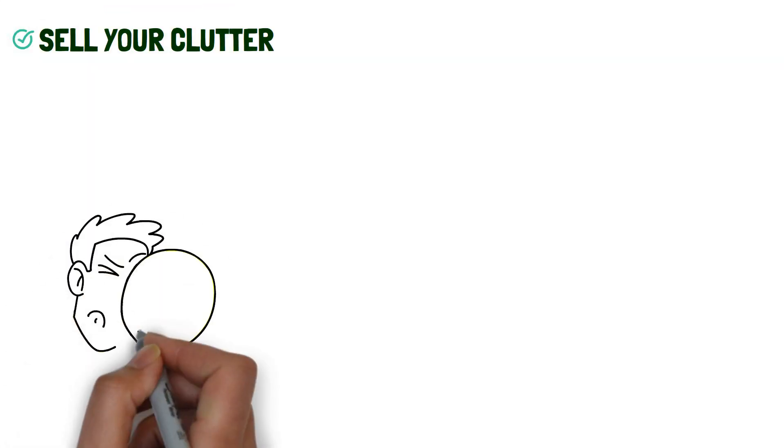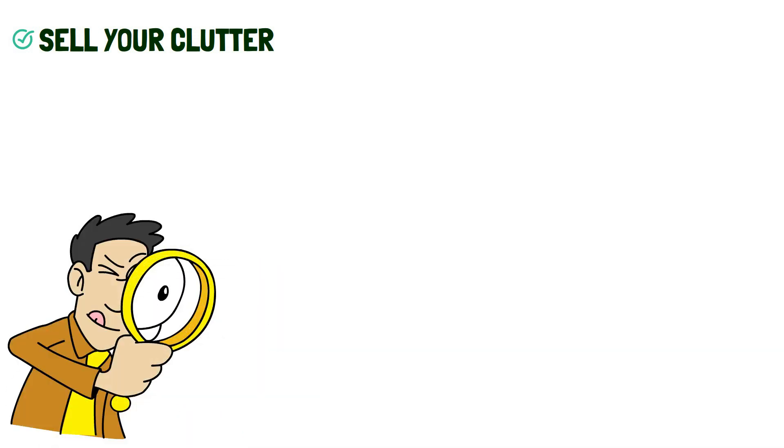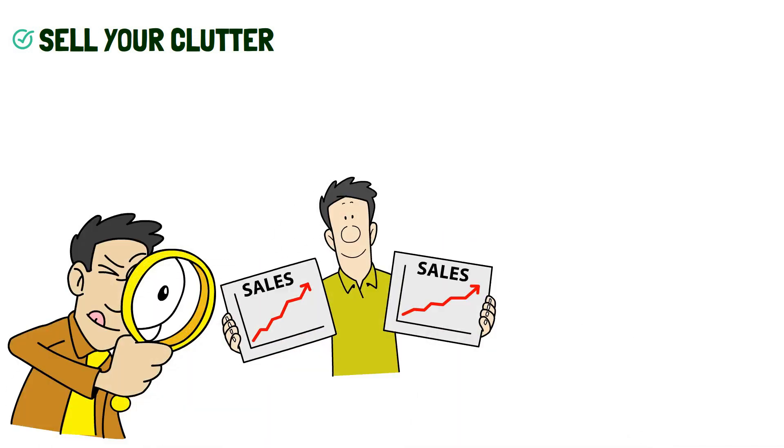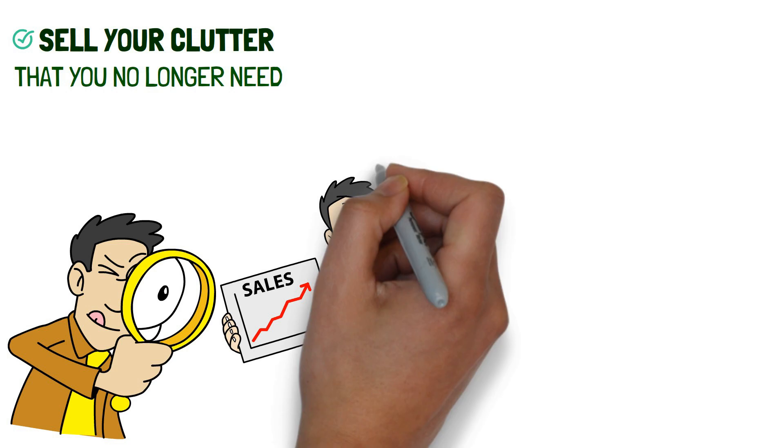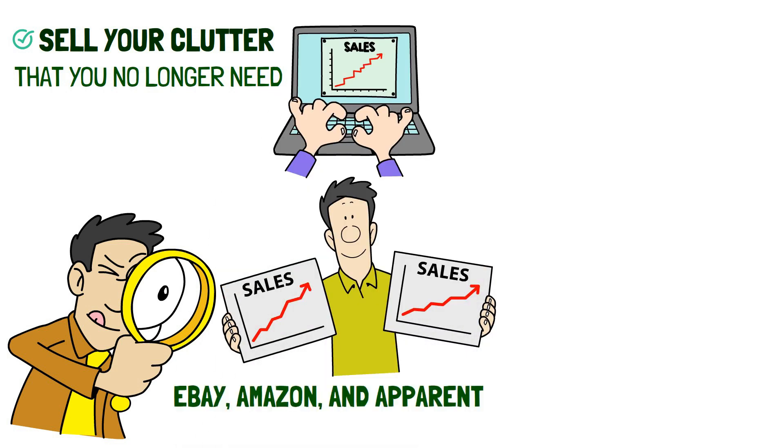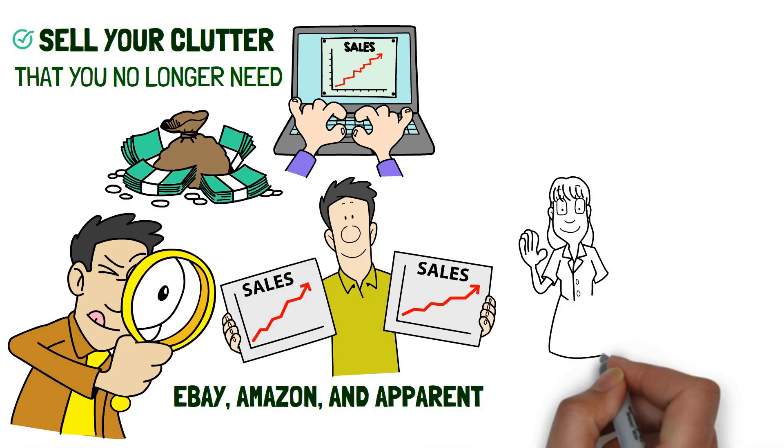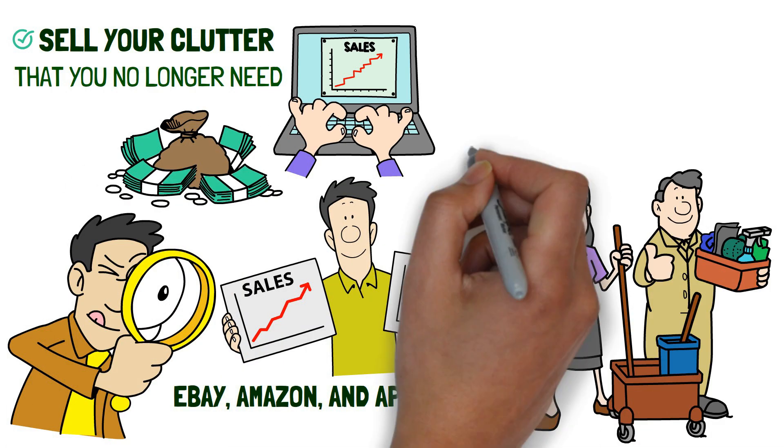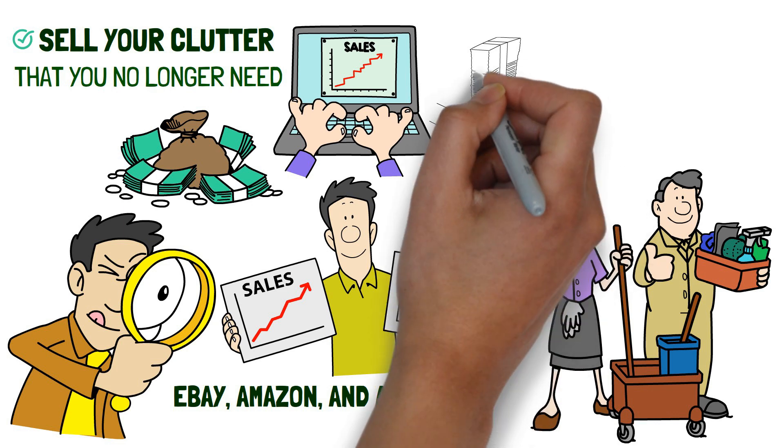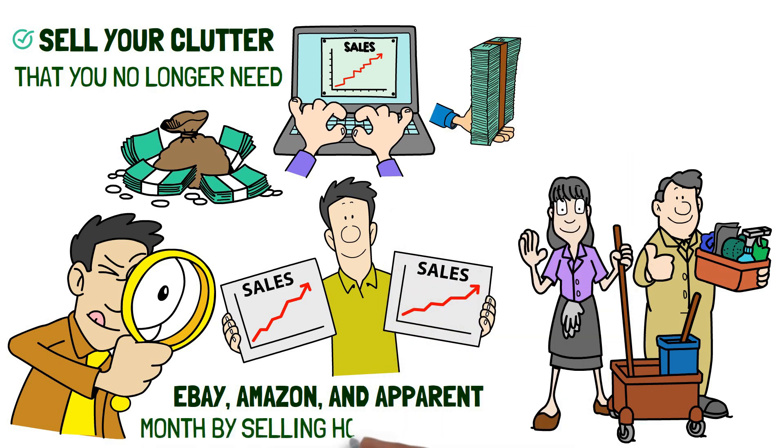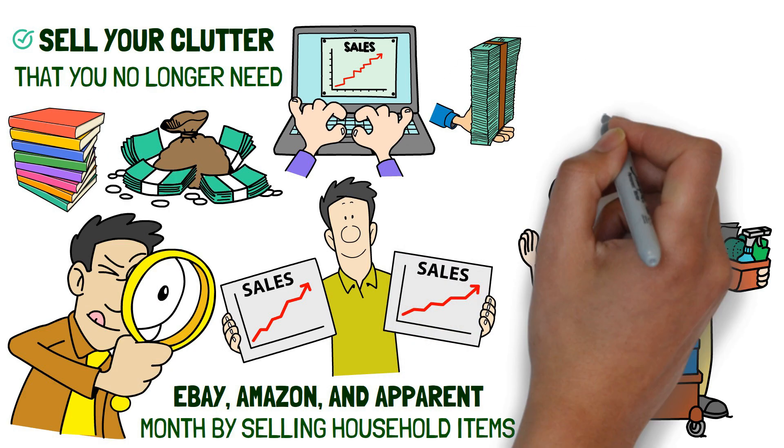Number 2: Sell Your Clutter. If you're looking for ways to make money online quickly, you might try selling some of your things that you no longer need. Selling through online marketplaces like eBay, Amazon, and Apparent is a great way to make some extra money and to declutter your home at the same time. You can make anywhere from a few dollars to hundreds of dollars each month by selling household items, books, and clothes.